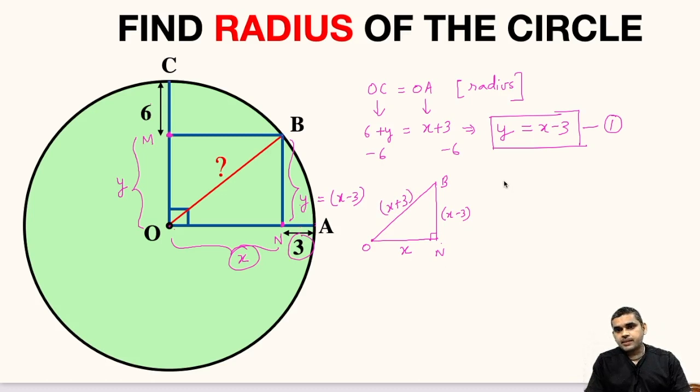Now we can apply Pythagorean theorem in this right triangle ONB. So we can write it as X plus 3 whole squared equals X minus 3 whole squared plus X squared. Let us expand this. This will be X squared plus 6X plus 9 and this will be X squared minus 6X plus 9 plus X squared is written as it is.